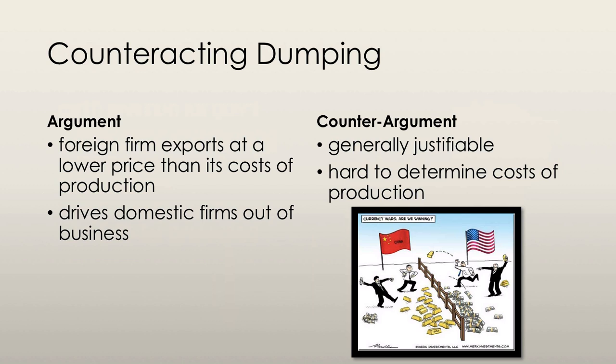Another argument for protectionism is that it can prevent dumping. Dumping occurs when a foreign firm sells its exports at a price lower than its costs of production. Some firms use this to drive all other companies out of business in order to establish a global monopoly.